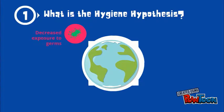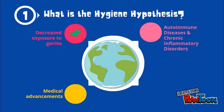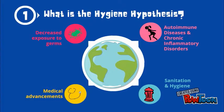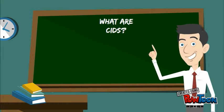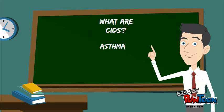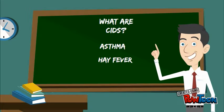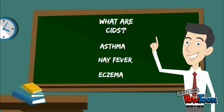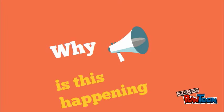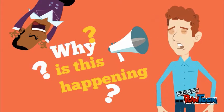The hygiene hypothesis attempts to explain the high incidence of chronic inflammatory disorders in modern industrialized environments. Chronic inflammatory disorders are long-term diseases that include an inflammatory immune response. Examples include asthma, hay fever, and eczema. The hygiene hypothesis suggests that people living in modern industrialized nations live in overly clean environments.